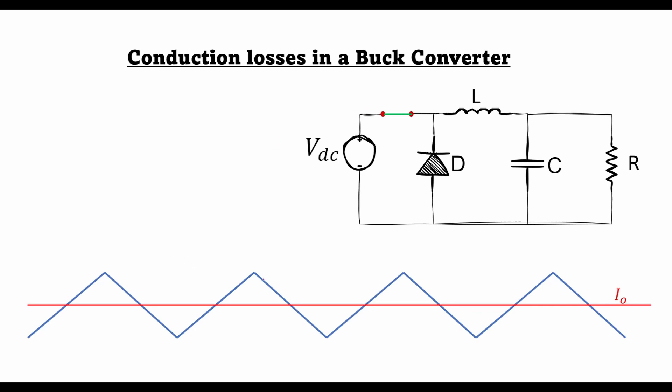If you recall from my previous lecture where we looked at this current waveform of a buck regulator, during the T on operation the current flows through the inductor L, and during the T off region the current is flowing through the freewheeling diode.